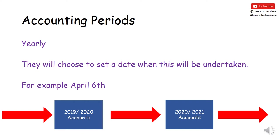For example, the 6th of April is the financial year start. A business can choose to run its accounts from any period it wishes. So the 2019-2020 accounts would run from April the 6th 2019 all the way through to April the 5th 2020, then from April the 6th 2020 through to April the 5th 2021, and so on. Because a business doesn't shut down at the end of each period, but for reporting purposes we need to financially end the year and start another one.